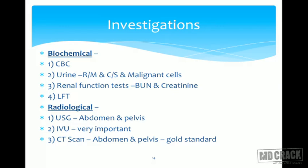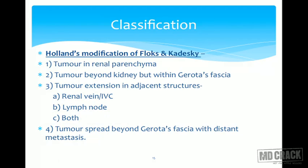Investigations for RCC include CBC — most important to detect anemia and leukopenia — urine routine microscopy for crystals, gravels, and infection, culture sensitivity to isolate microorganisms causing concomitant UTI, and cytological investigation to detect malignant cells. Renal function tests will show marginal elevation of creatinine or blood urea nitrogen. Liver function tests are also very important. Radiologically, ultrasonography is the baseline investigation; IVU is very important, but CT scan of abdomen and pelvis — plain plus contrast — plays the gold standard role.